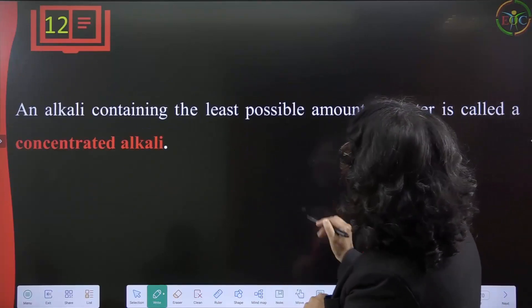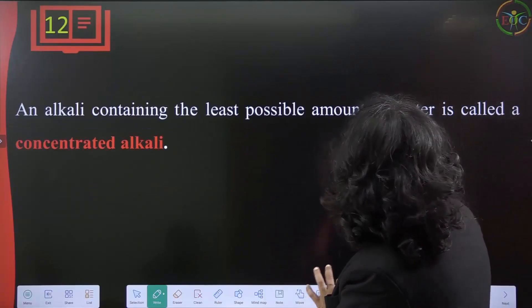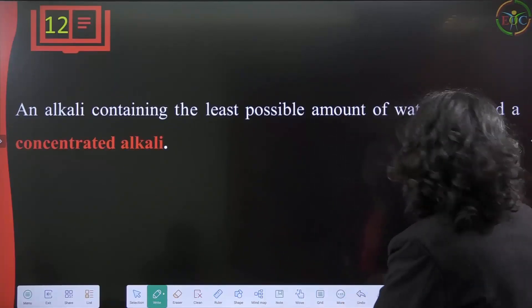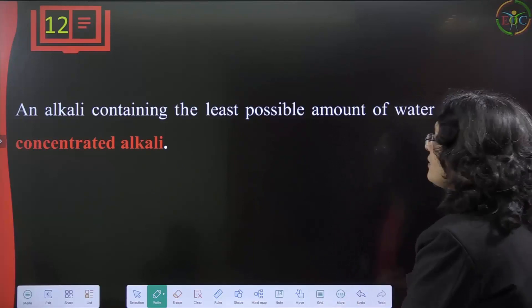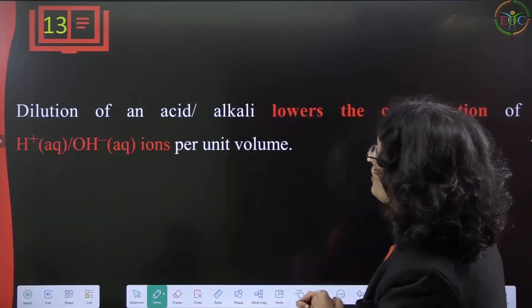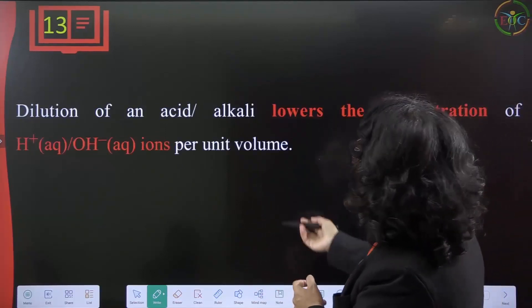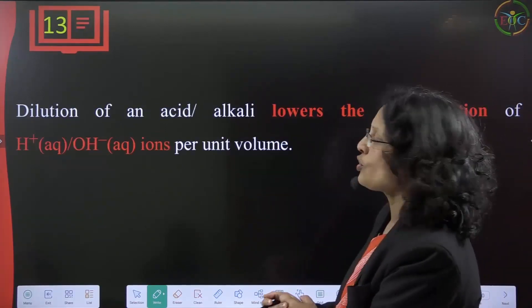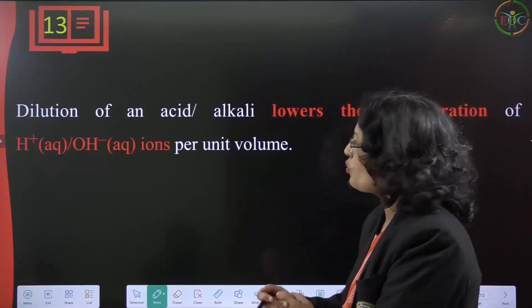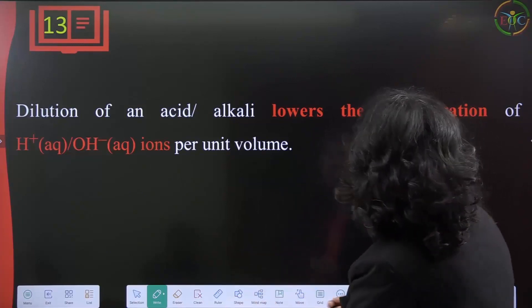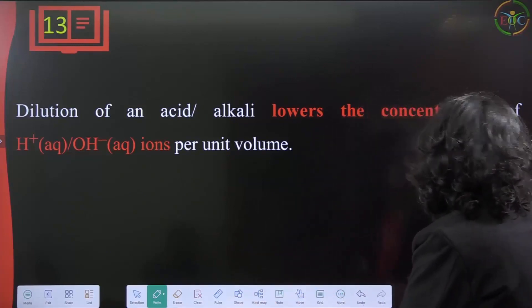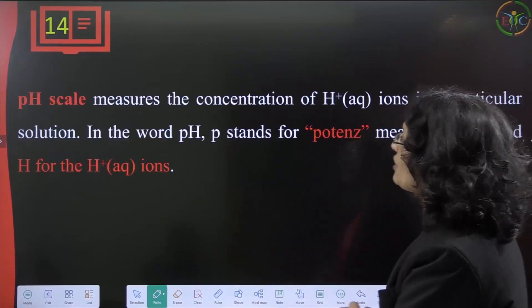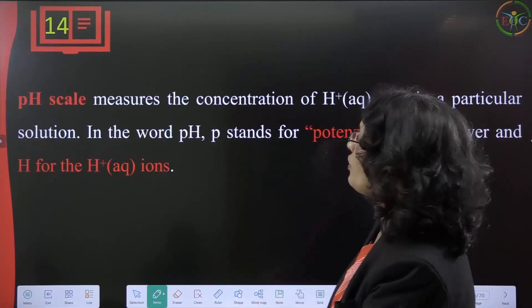An alkali containing the least possible amount of water is called a concentrated alkali. Dilution of an alkali lowers the concentration of OH⁻ ions per unit volume because you are adding more water.